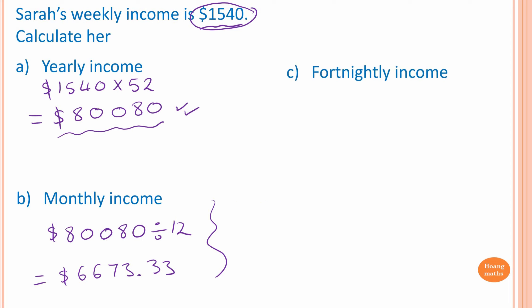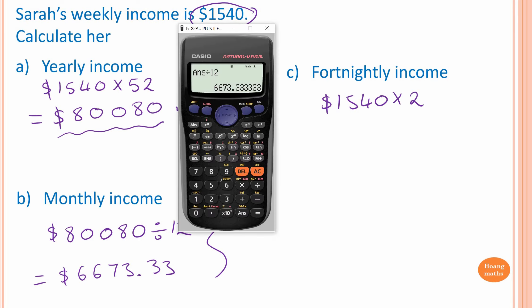Next one, fortnightly income. So we know that one fortnight is 2 weeks. So to work out fortnightly, we just go $1,540 and we times this by 2. So $1,540 times 2, so $3,080.